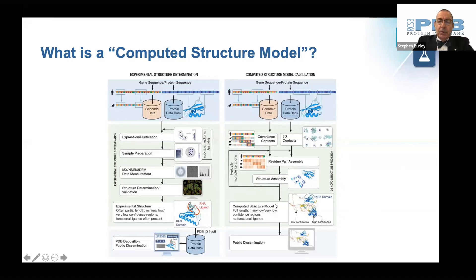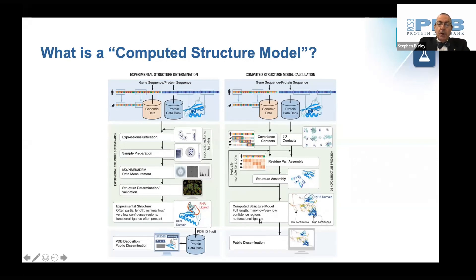Computed structure models are typically full-length polypeptide chains, particularly for eukaryotic proteins. They may include substantial numbers of either low or very low confidence regions that are probably disordered, and no functional ligands are present.